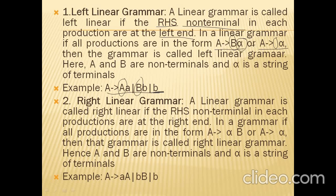In Right Linear Grammar, the non-terminals in each production are at the right end. If we find the non-terminal at the left position, it is Left Linear Grammar; if at the right position, it is Right Linear Grammar. In Right Linear Grammar, production rules are of the form A tends to alpha-B, where B is a non-terminal and alpha is a string of terminals, or A tends to alpha, meaning only terminals.